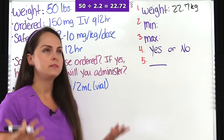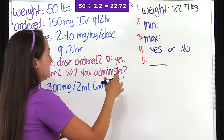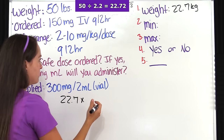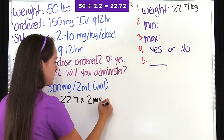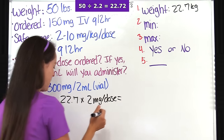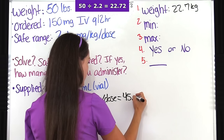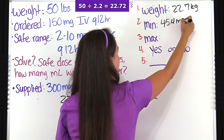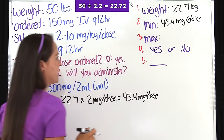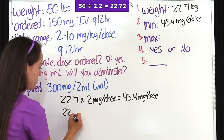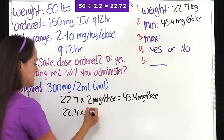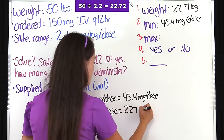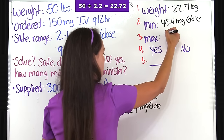Next we solve for the minimum dose: 22.7 kilograms multiplied by the minimum range of 2 milligrams per dose gives us 45.4 milligrams per dose — that is our minimum. For the maximum: 22.7 kilograms multiplied by 10 milligrams per dose gives us 227 milligrams per dose. That is our maximum amount.